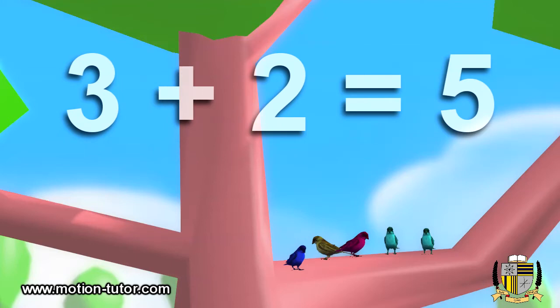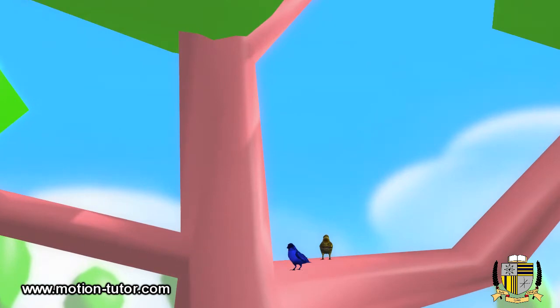Now let's switch these numbers around and see if two plus three is equal to five. There are two birds on the tree branch. Three more birds join them. Here are the two birds: one, two. And here are the three birds: one, two, three. How many birds are on the branch?